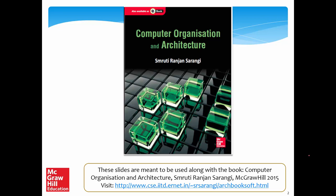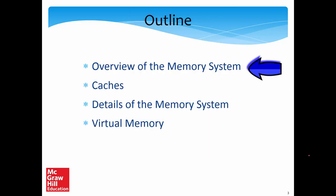This is the 10th chapter of the book, Computer Organization and Architecture. It has been published by McGraw-Hill in 2015, and you will get copies in almost all countries via Amazon. We will discuss four separate sections: an overview of the memory system, caches, details of a memory system with mathematical models, and finally virtual memory.